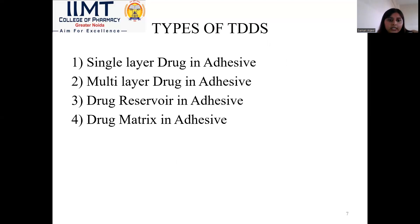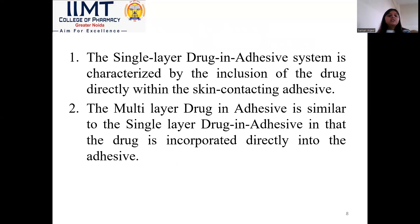These are the types of transdermal drug delivery system. First is the single layer drug-in-adhesive; second, multi-layer drug-in-adhesive; third, drug reservoir-in-adhesive; and fourth, drug matrix-in-adhesive. The single layer drug-in-adhesive is characterized by the inclusion of the drug directly within the skin-contacting adhesive, and it is in the form of a single layer.